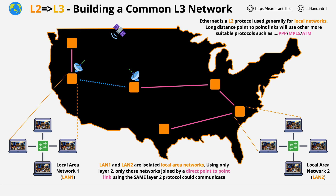Layer 3 is the common protocol which can span multiple different layer 2 networks. The network layer can be added onto one or more layer 2 networks, and it adds a few capabilities.